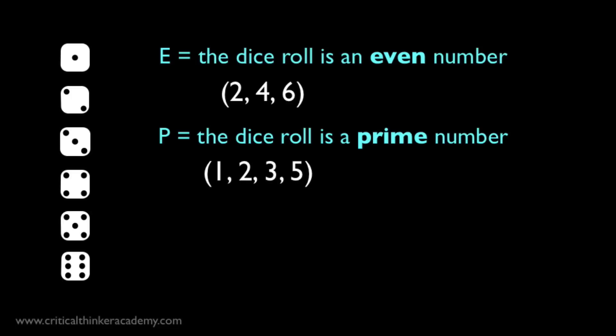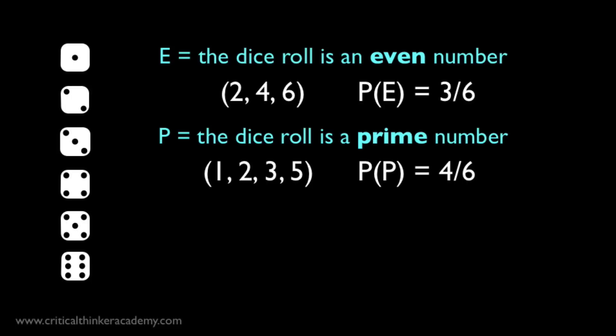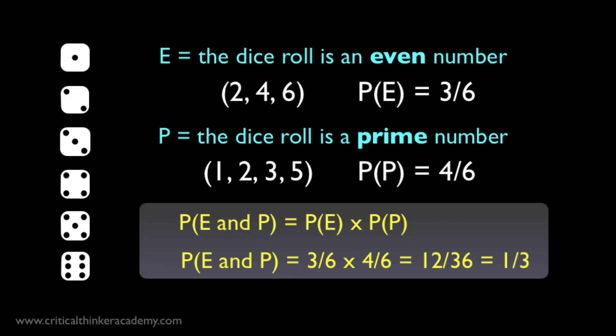Now, if we were to use the restricted conjunction rule, we'd just multiply these probabilities together. The probability of a dice roll being even is 3 in 6, or 1 half, since we've only got 6 possibilities and 3 of those are even. The probability of a dice roll being prime is 4 in 6, since the primes make up 4 of the 6 possible rolls. If we use the restricted conjunction rule, we just multiply these numbers together and get 12 out of 36, which equals 1 third.